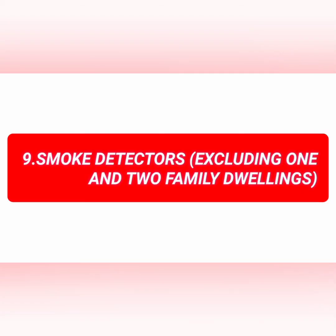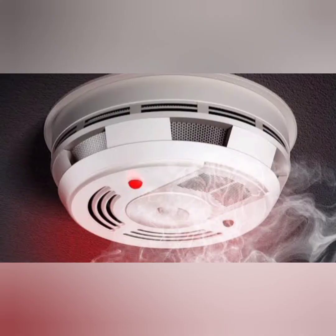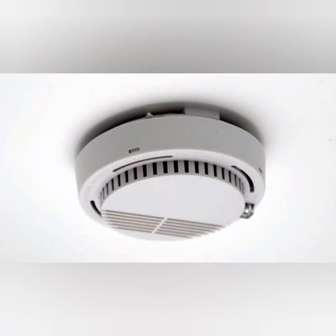The ninth device in the list is smoke detectors. For visual inspection, we need to make the initial acceptance test, and then the periodic frequency for smoke detectors is semi-annual. There is an exception for smoke detector visual inspection: one and two family dwellings.